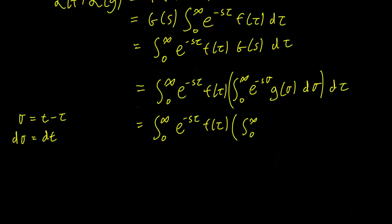So anyway, let's just leave everything the same on the outside of the integral. So we have, instead of σ, t minus τ, so e^(-s(t-τ)), g instead of σ, t minus τ, and dσ, replace with d little t, and a dτ on the outside.